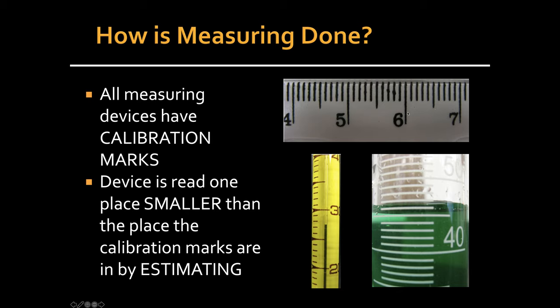So for example, in this ruler, this is the ones place, which means each of these calibration marks would represent a tenth of this unit. So since the measuring device is actually labeled to the tenths place, you would estimate between these lines, squeezing out one more place, the hundredths. So you will read the measuring device one place smaller.